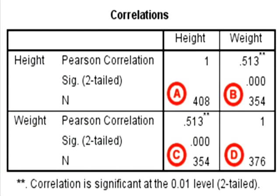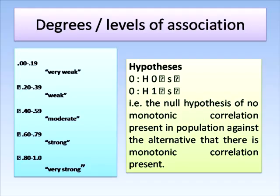The levels of association are: 0.00 to 0.19 is very weak correlation; 0.20 to 0.39 is weak; 0.40 to 0.59 is moderate; 0.60 to 0.79 is strong; and 0.80 to 1.00 is very strong level of association and agreement between two variables.